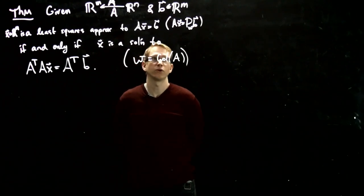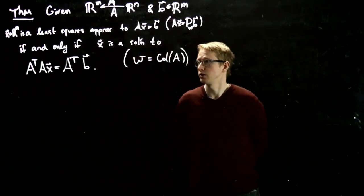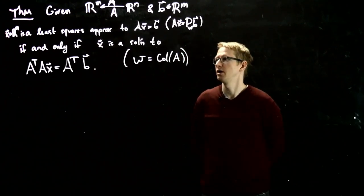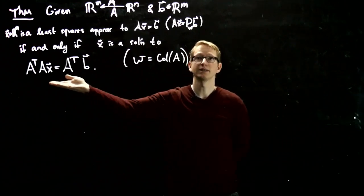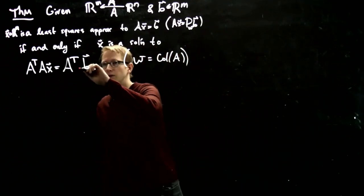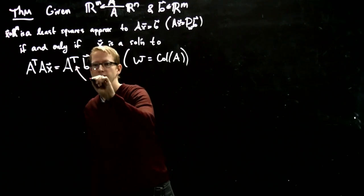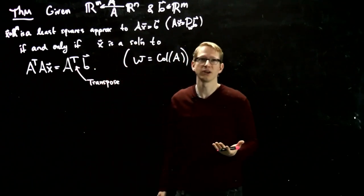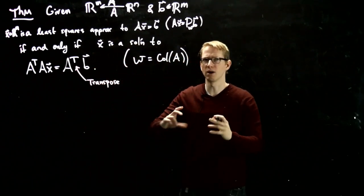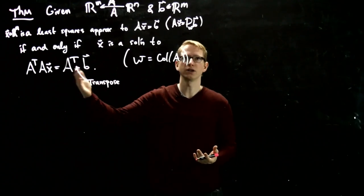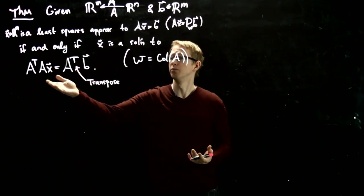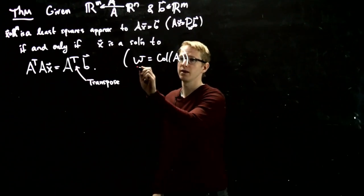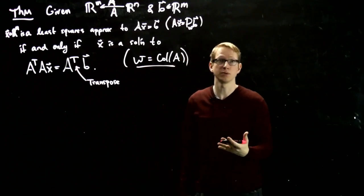We mentioned last time that if we have an orthonormal basis of W, we can actually solve this problem relatively easily. But in general we're not given an orthonormal basis of W, so this formulation makes it much simpler to compute. Taking the transpose just means swapping the columns with the rows, giving a new linear system, and in general this is much easier to solve. This simplification occurs because we've taken our subspace to be the column space of some matrix.